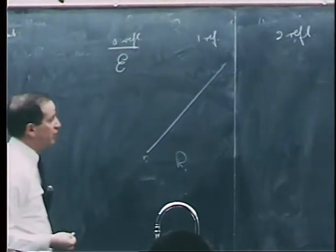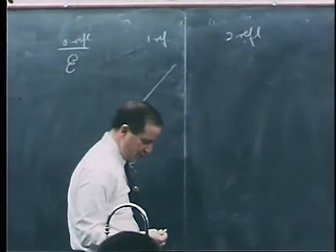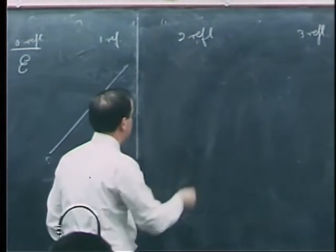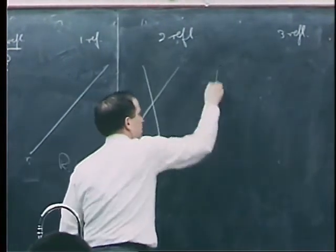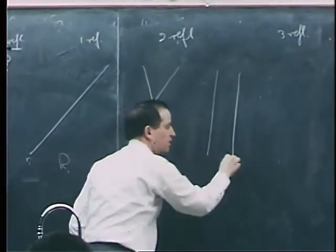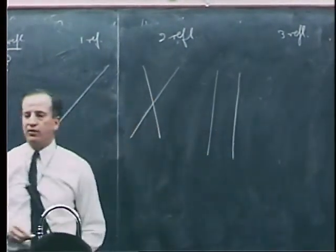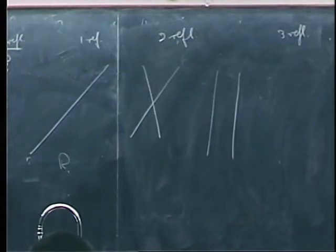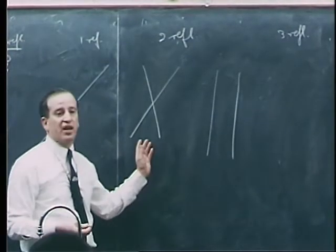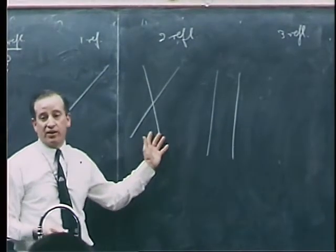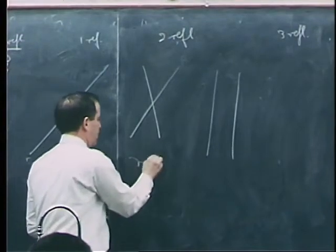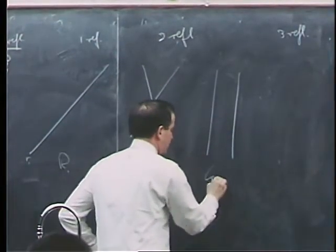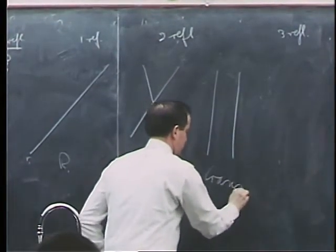If two reflections were necessary to do the job, two situations arise: either those two reflections are intersecting or parallel. In the first case, the product is a rotation. In the second case, the product is a translation.